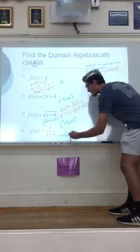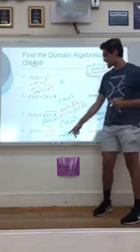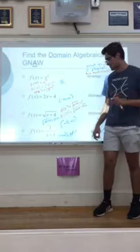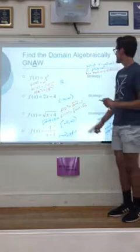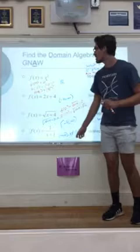Every single number is fine except x cannot equal negative 1. Every number is good except for negative 1. Negative 2? Fine. Negative 1.1? Fine. But x cannot equal negative 1. That is the only problem. The domain is everything except that.